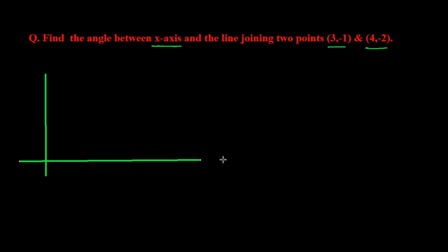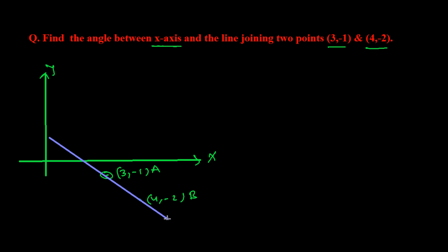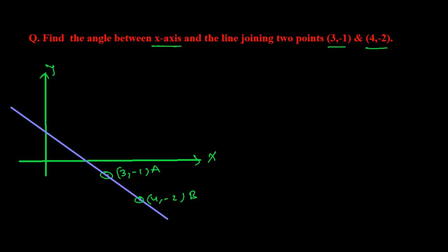Here we have the x-axis and the y-axis. We have two points: three comma minus one — let's call this point A — and four comma minus two — let's call this point B. We draw a line joining these two points, and we need to find the angle between this line L (or AB) and the x-axis.